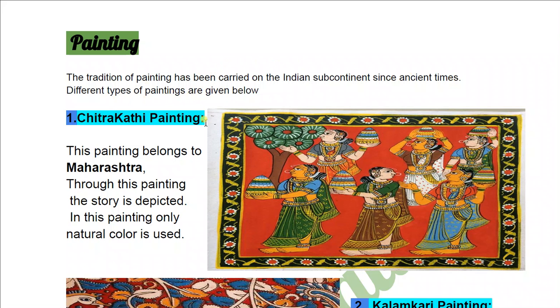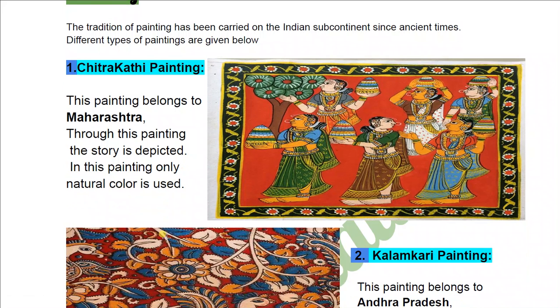Number 1: Chitra Kothi Painting. This painting belongs to Maharashtra. Through this painting, the story is depicted. In this painting, only natural color is used.